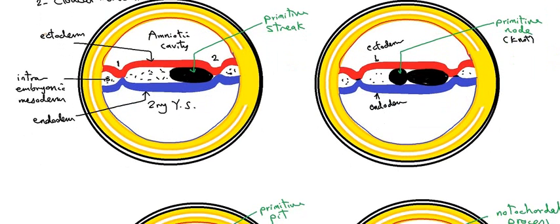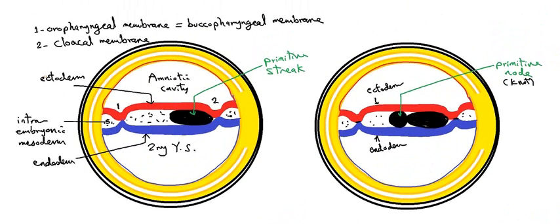Now we want to talk about formation of the notochord. In the third week of pregnancy, the embryo is formed of three layers: ectoderm and endoderm, and in between, intraembryonic mesoderm. The ectoderm and endoderm come into contact together at the cephalic end and at the caudal end of the embryo.